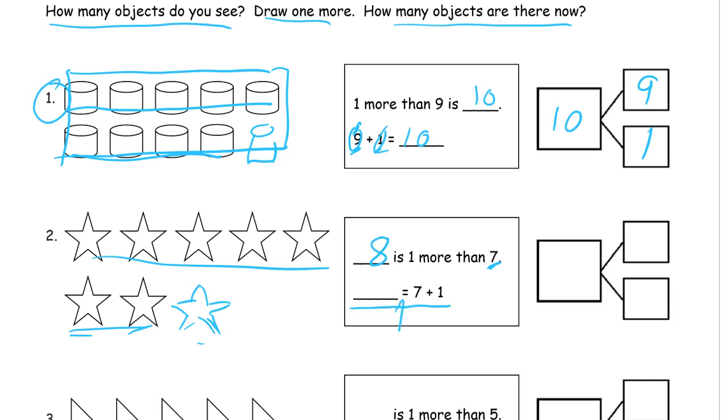Now this is one of those backwards addition sentences. You'll notice the equal sign comes before the plus sign this time. We're reading eight equals seven plus one. It's not eight plus seven equals one. That wouldn't make sense. You can't have eight and add seven more and have only one. You've got to be careful. It's not always left to right with the plus sign first and the equal sign after. Sometimes the total can go first. Looking at our number bond, we had seven and we added one more, and eight was our total.